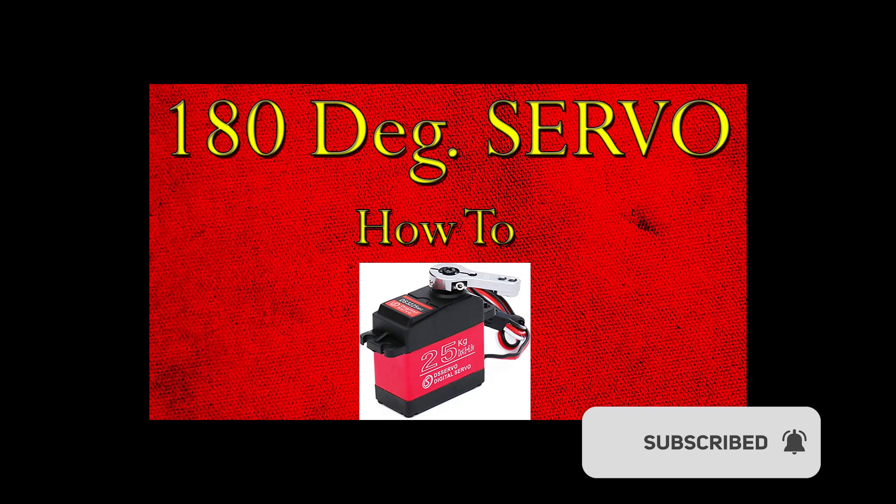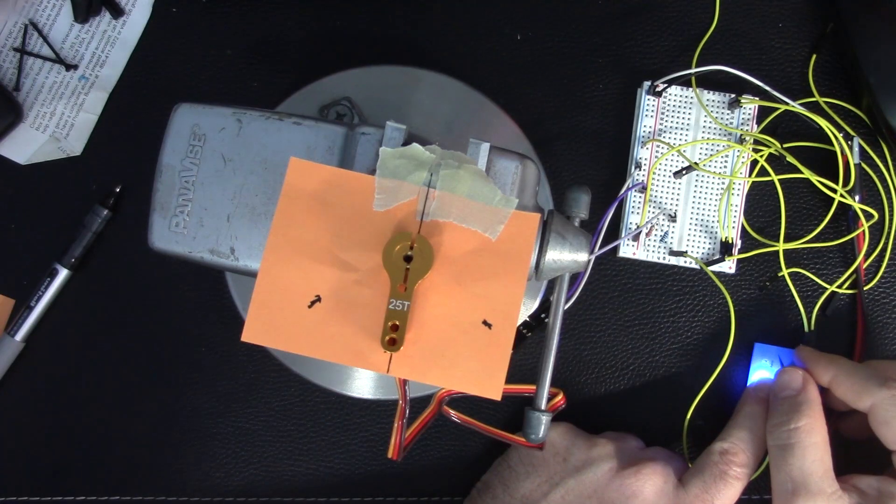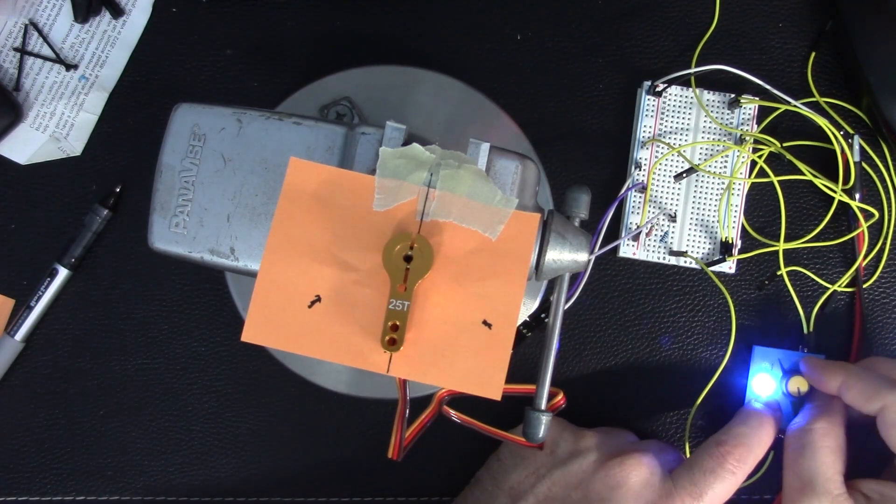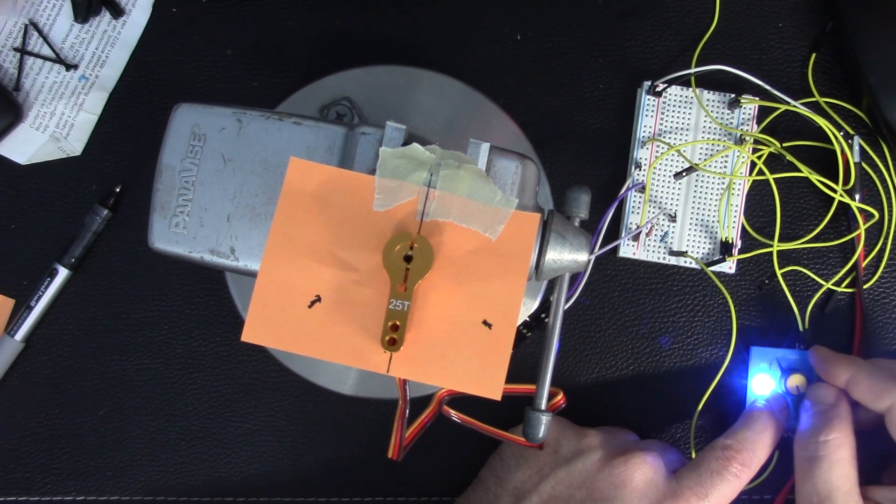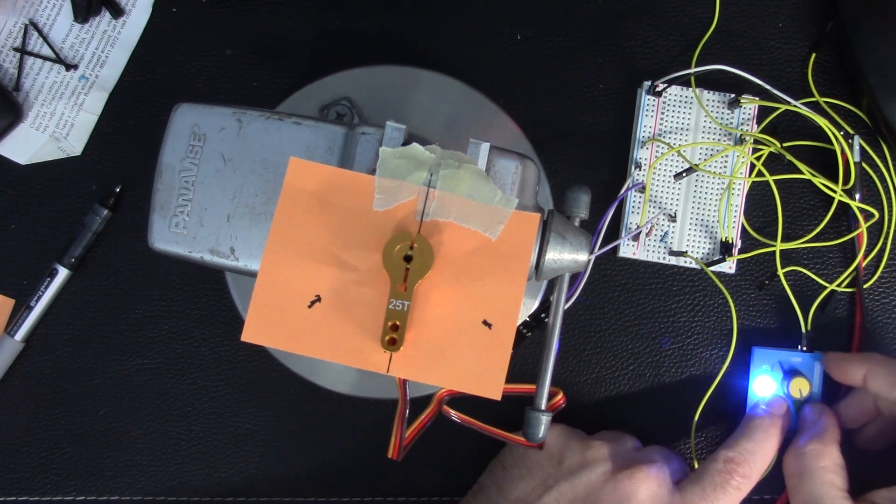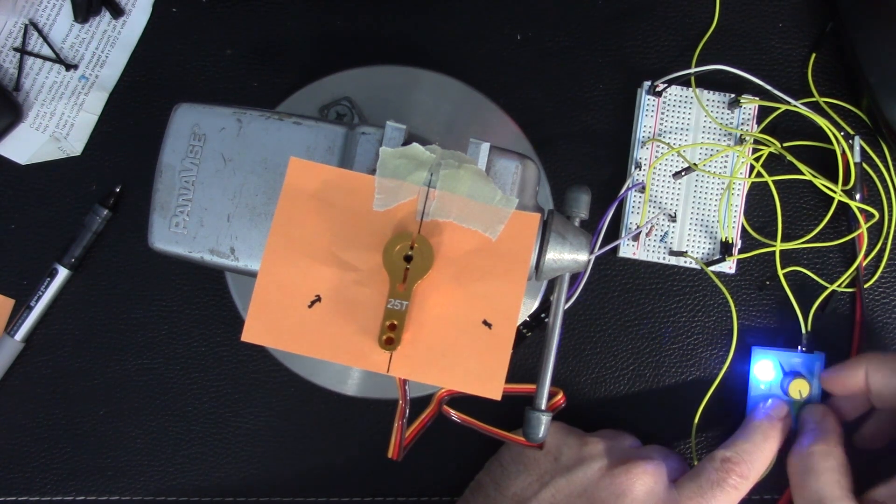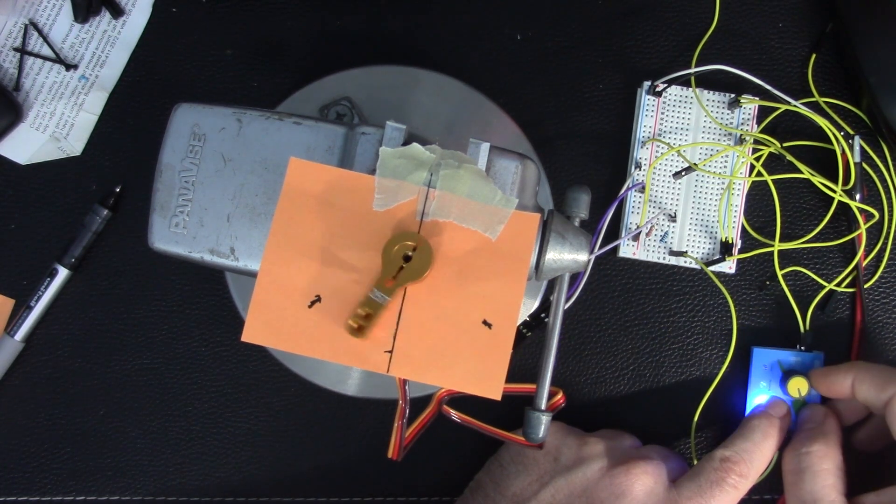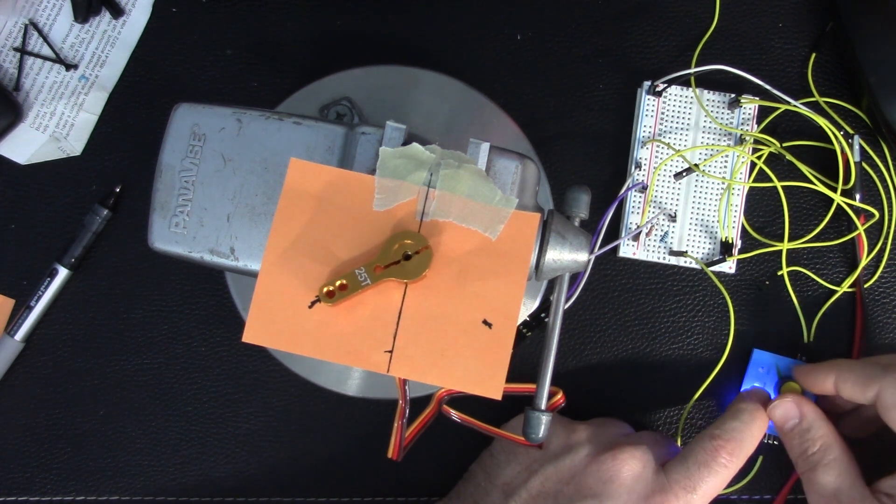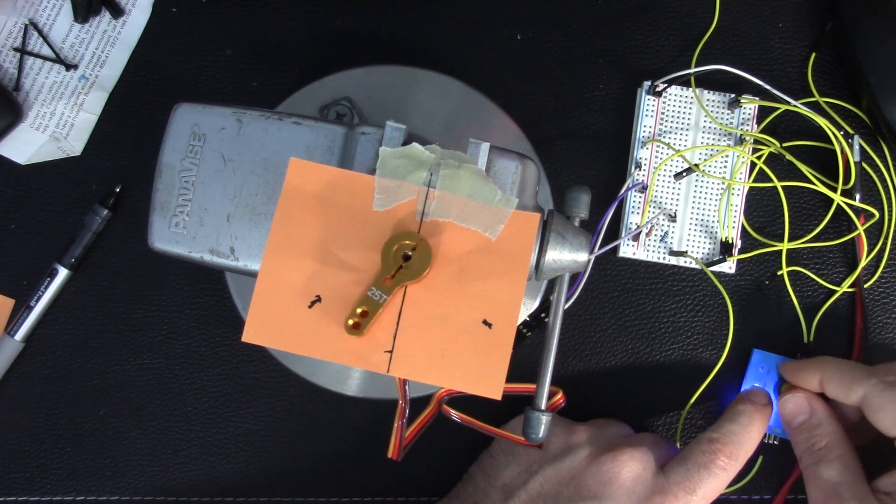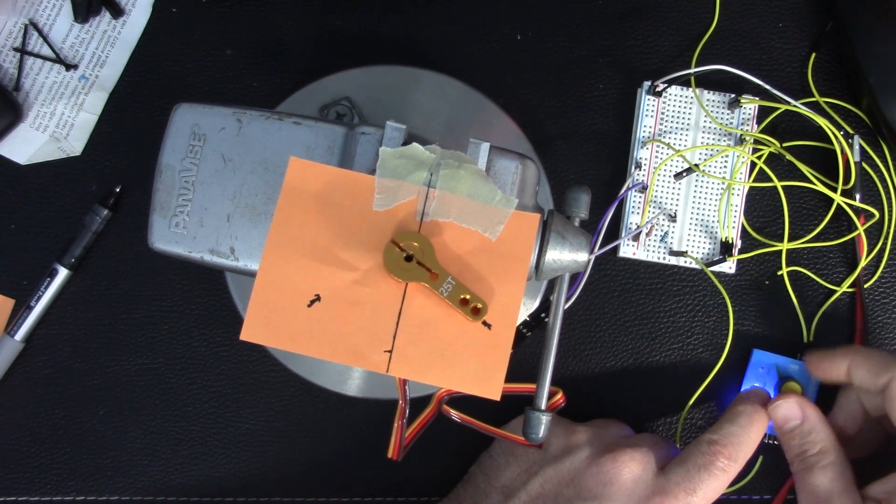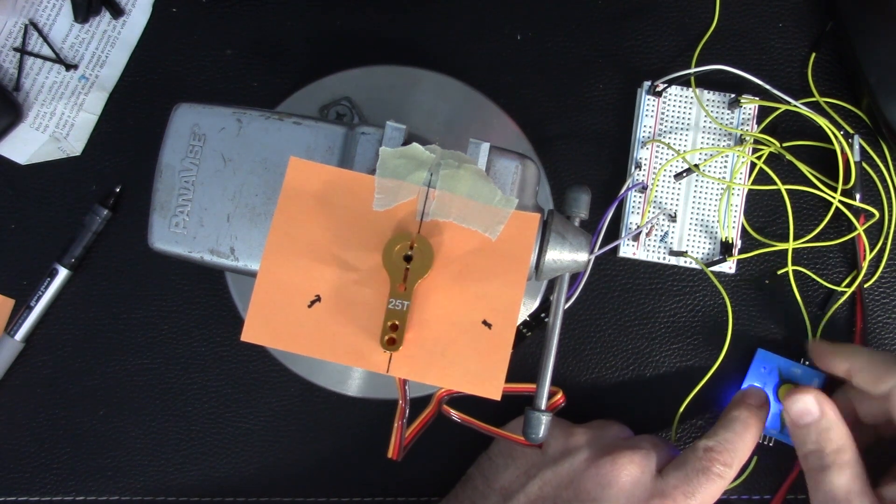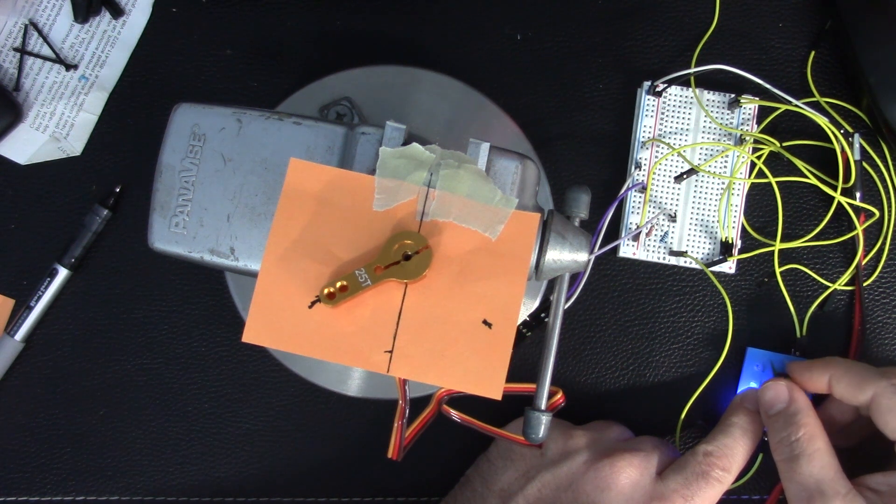Let's test the throw of this 25 kilogram servo. If we set it up to auto mode, we can see what the swing is, and we can see that it's not giving us that full 180 degree range that we're looking for here. So let's see if we can fix that.